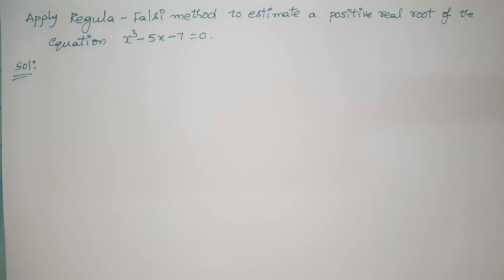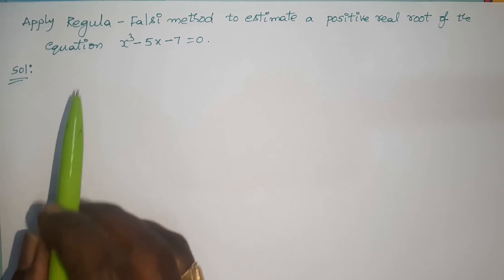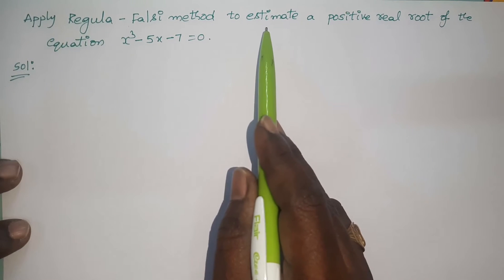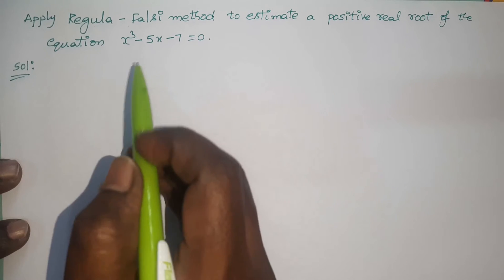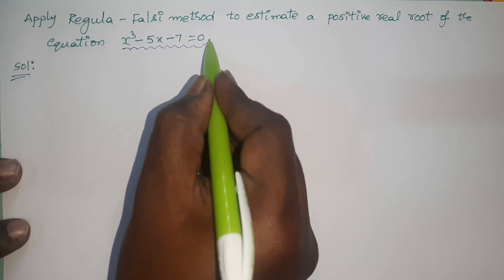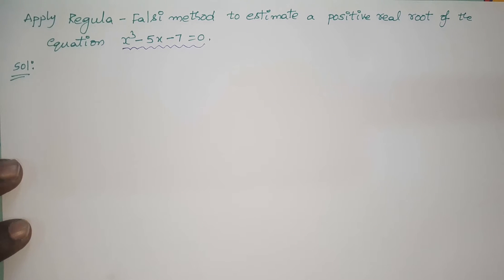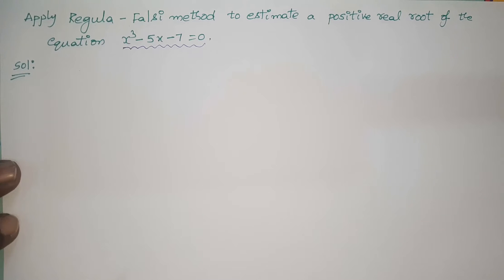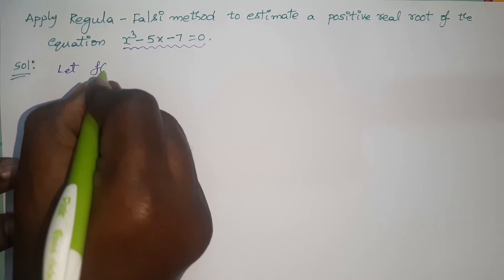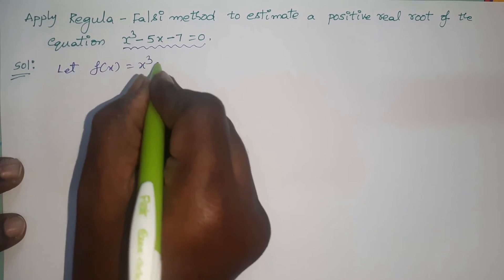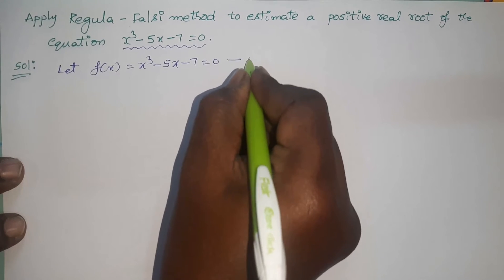Hi everyone, welcome back to our channel. In this video I would like to give another example on the Regula Falsi method. Apply Regula Falsi method to estimate the root of the equation x³ - 5x - 7 = 0. This is an algebraic equation and we are going to find a root using Regula Falsi method. Let f(x) = x³ - 5x - 7.